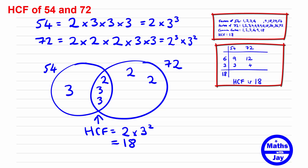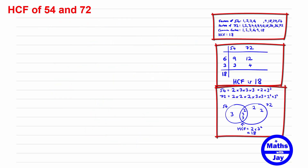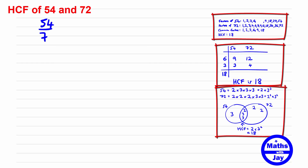That's the prime factors method — use it if you like working with products of primes, otherwise the second method is probably easier. Now let's look at where knowing the highest common factor is useful. If we have the fraction 54 over 72 and want to write it in its simplest terms, dividing both numerator and denominator by the highest common factor does it in one step: 54 divided by 18 is 3, and 72 divided by 18 is 4, so the fraction simplifies to three quarters.